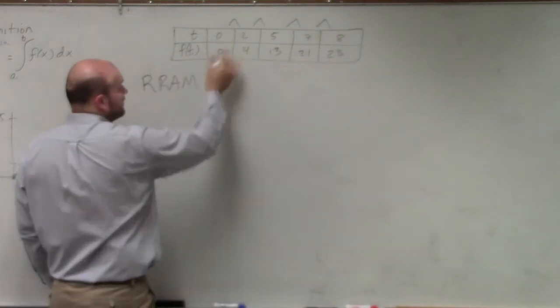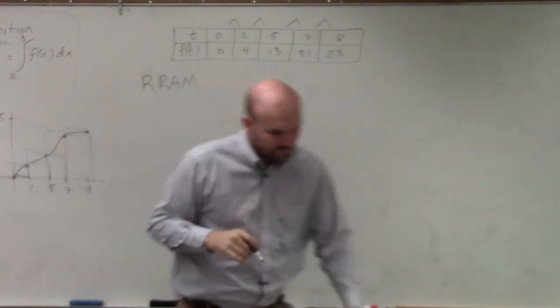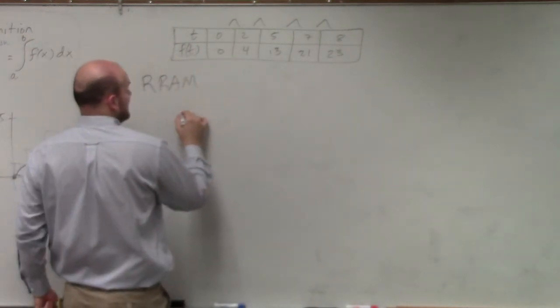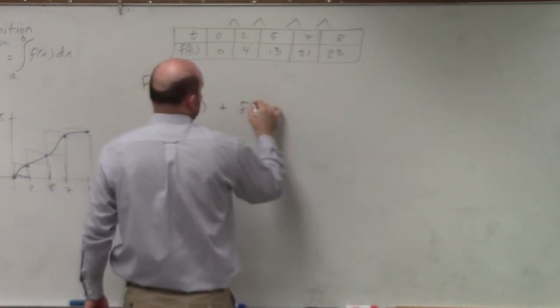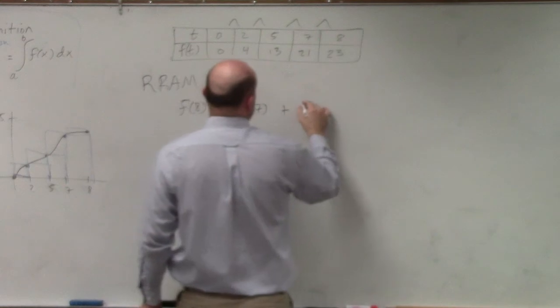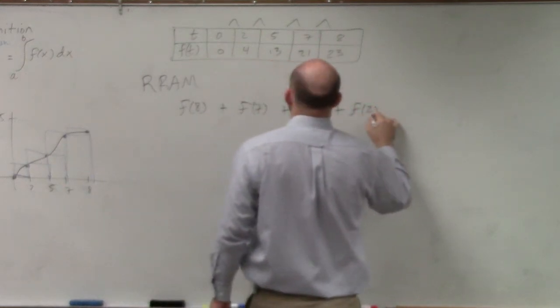Now we're going to start with, you can start from the right endpoint and say f of 8 plus f of 7 plus f of 5 plus f of 2.